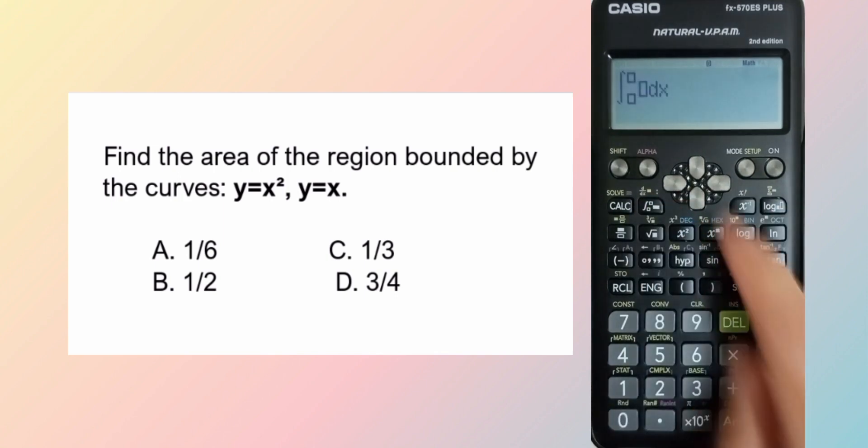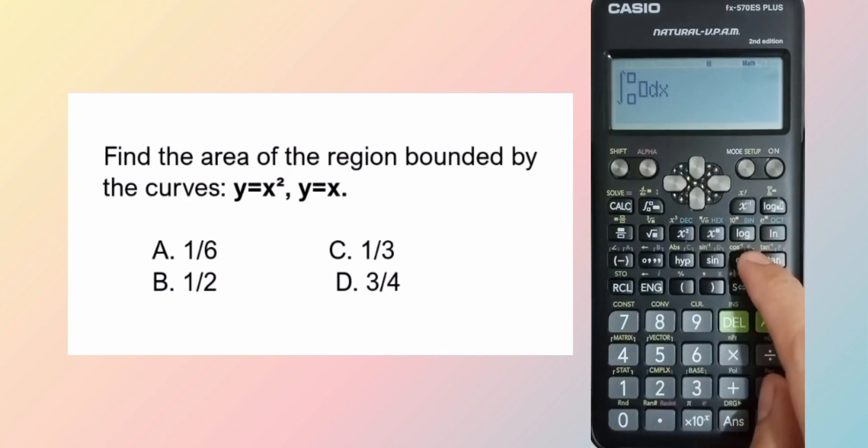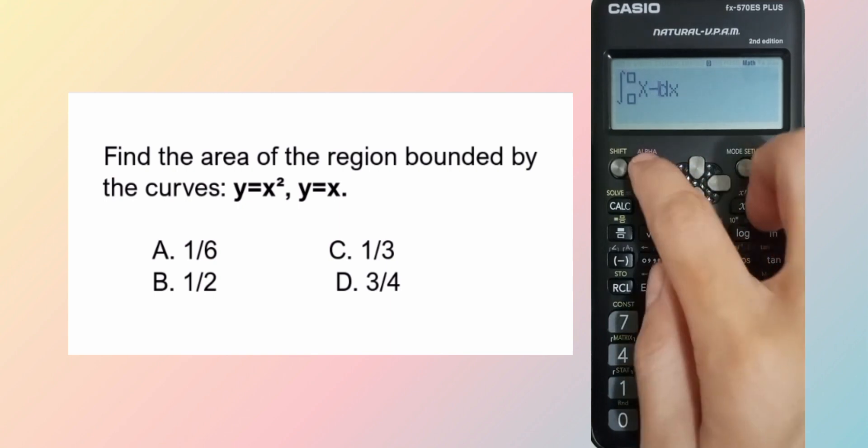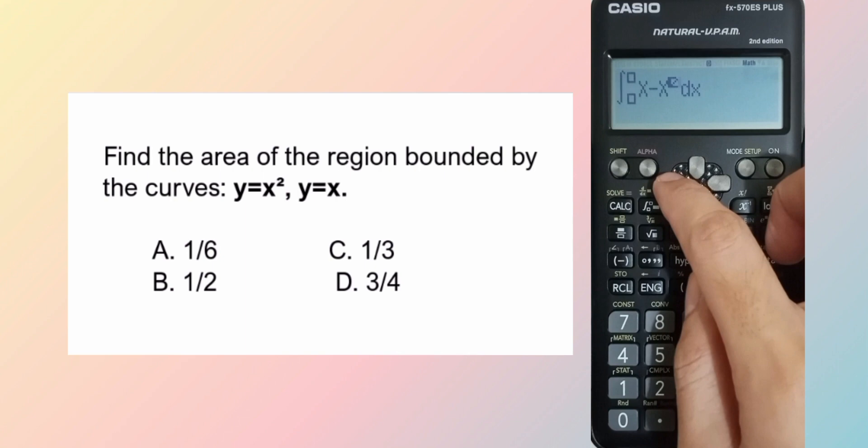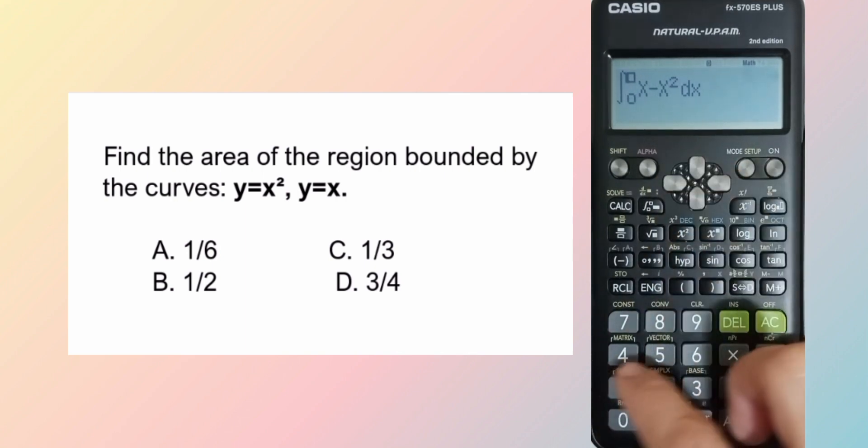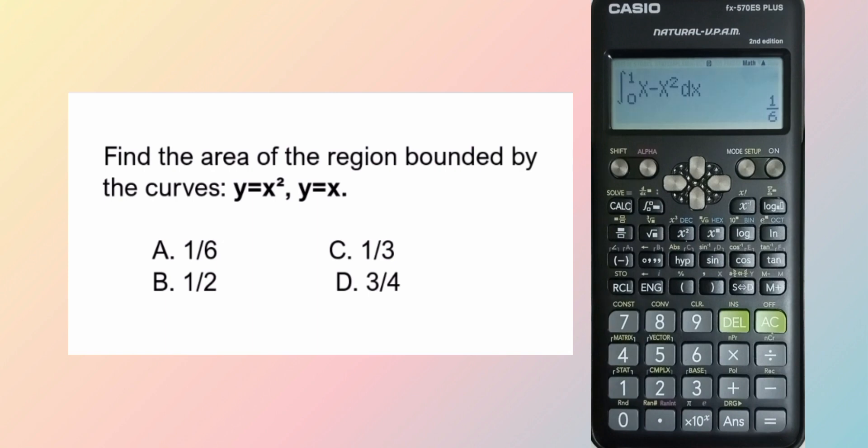So integral of x minus x squared, the two given equations, then limits of 0 to 1. The answer is 1 over 6, letter A.